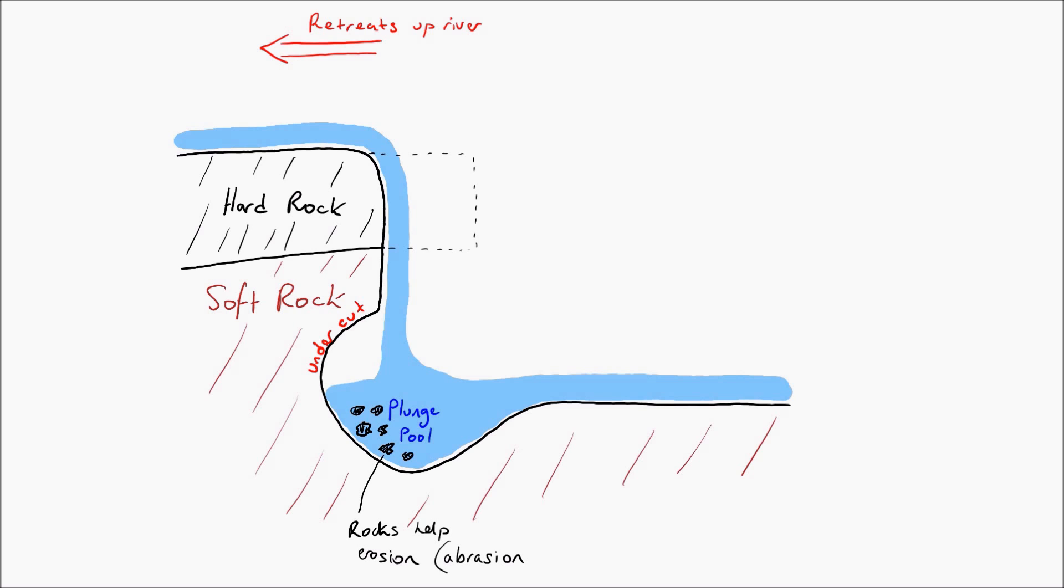When the undercut section drops off and falls into the plunge pool, it breaks up into lots of little rocks that help with the erosion and enhance it. This is done through the process of abrasion.